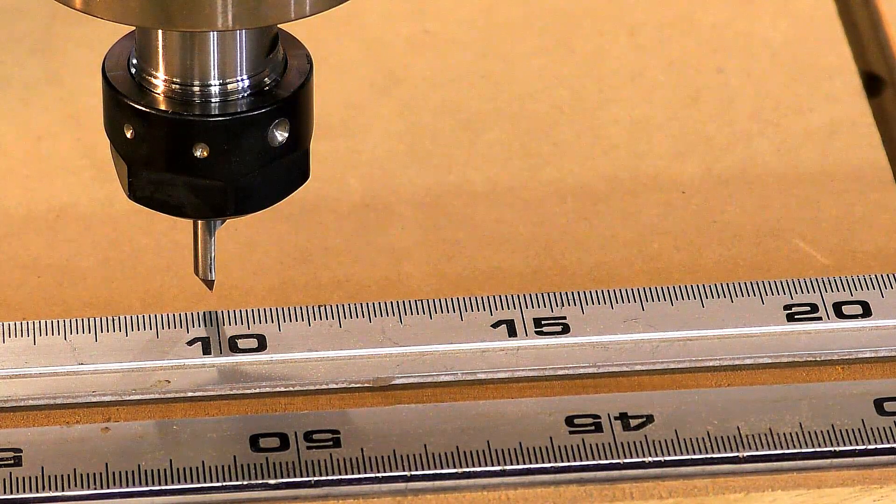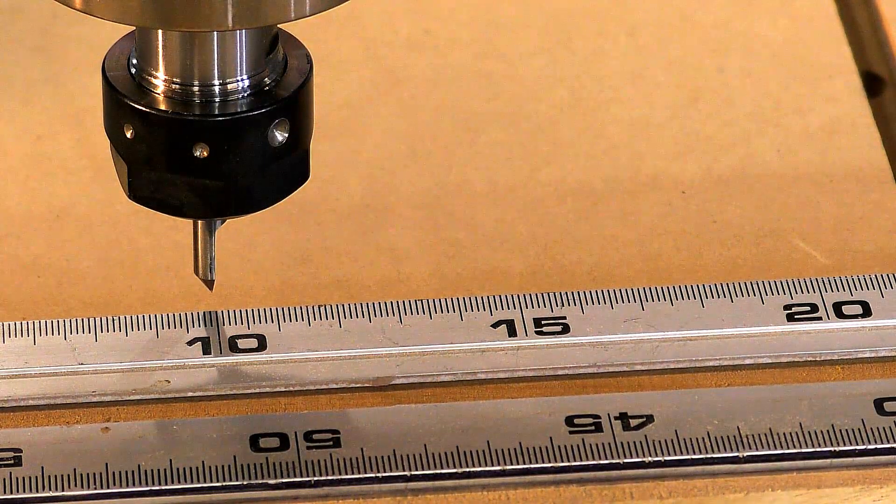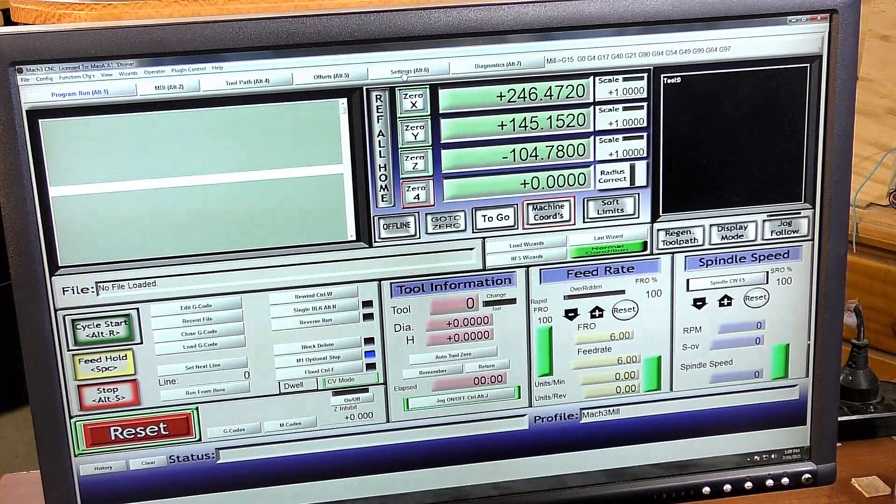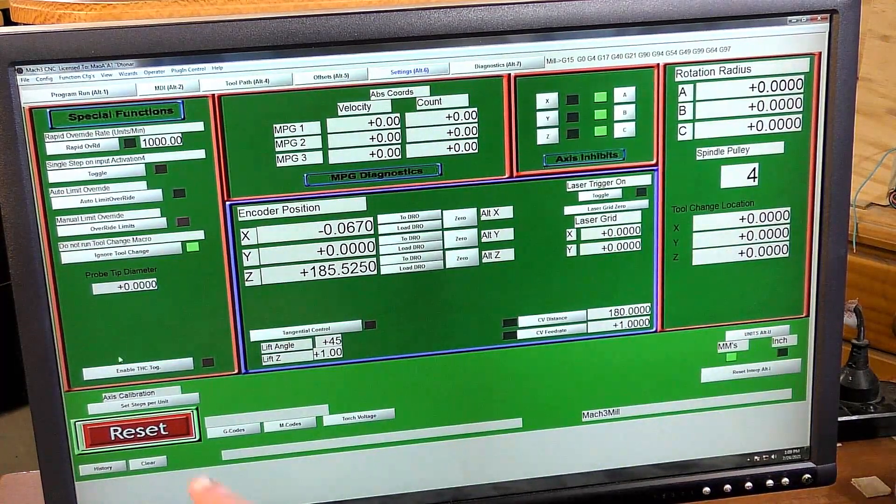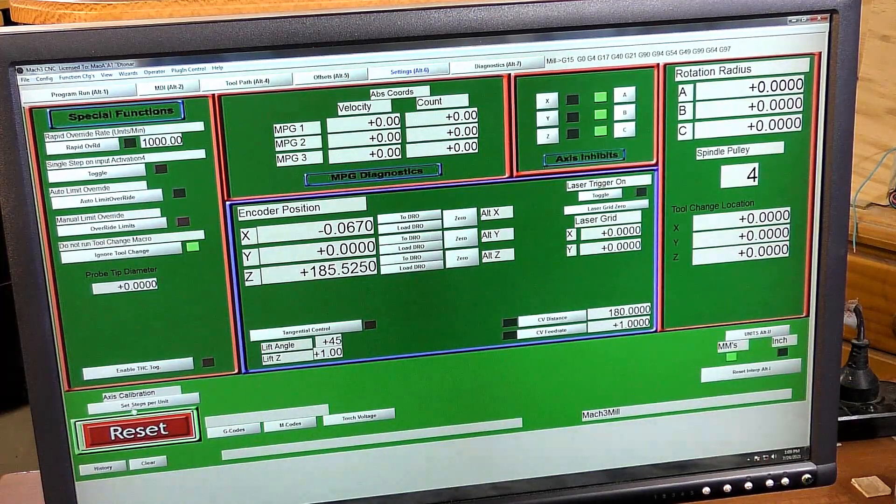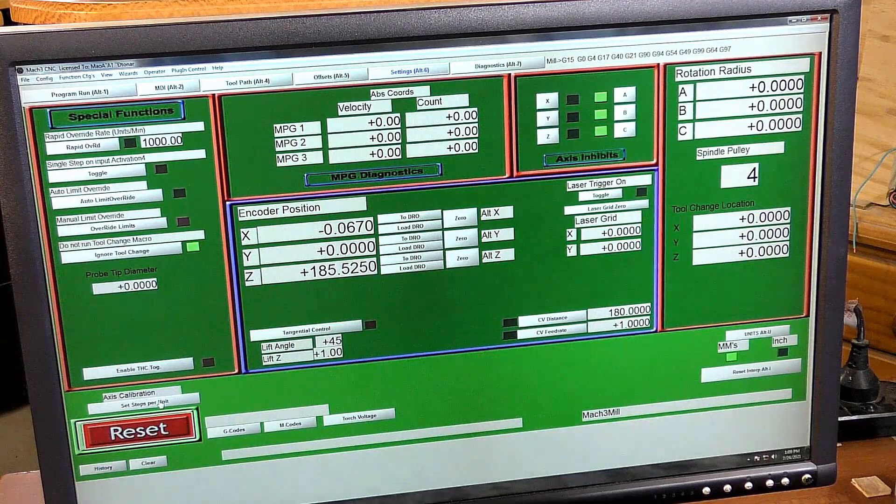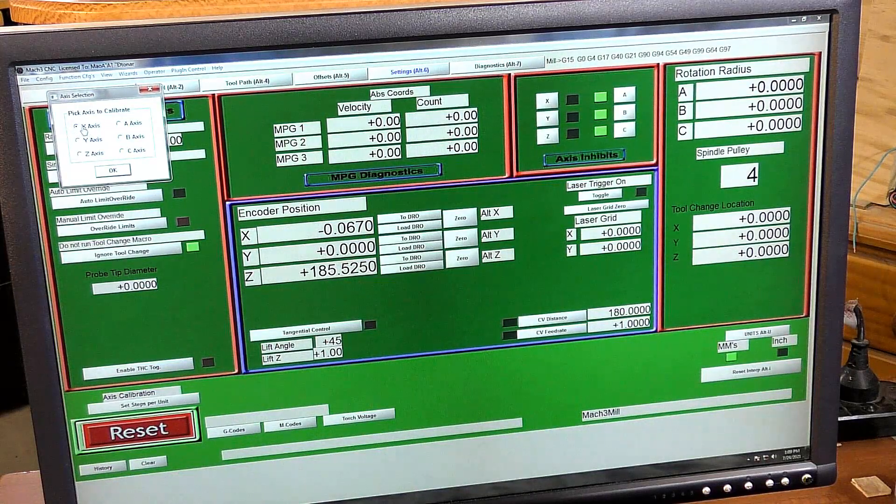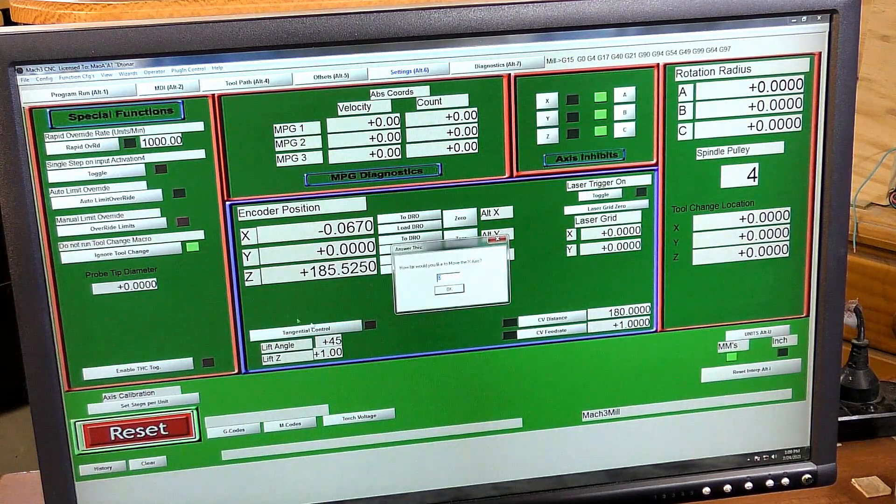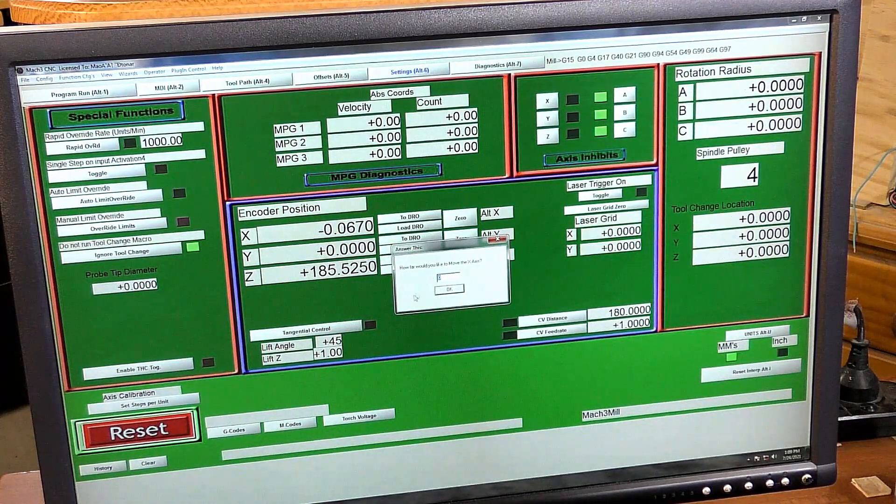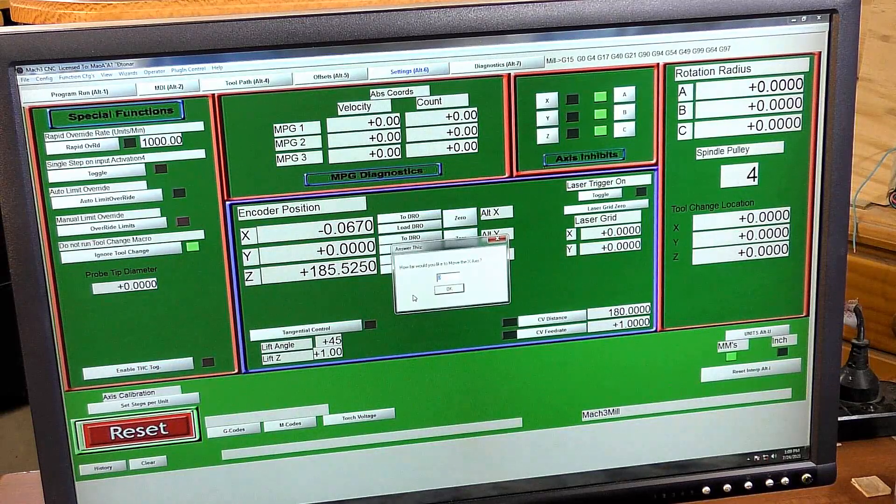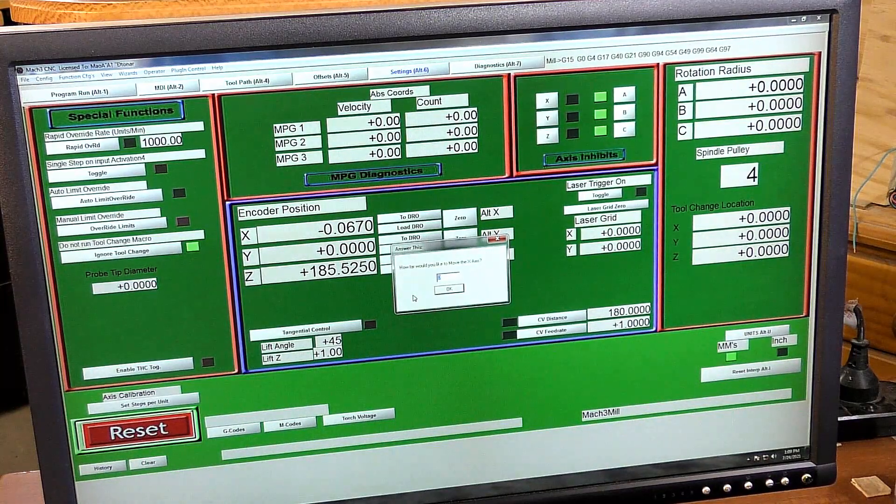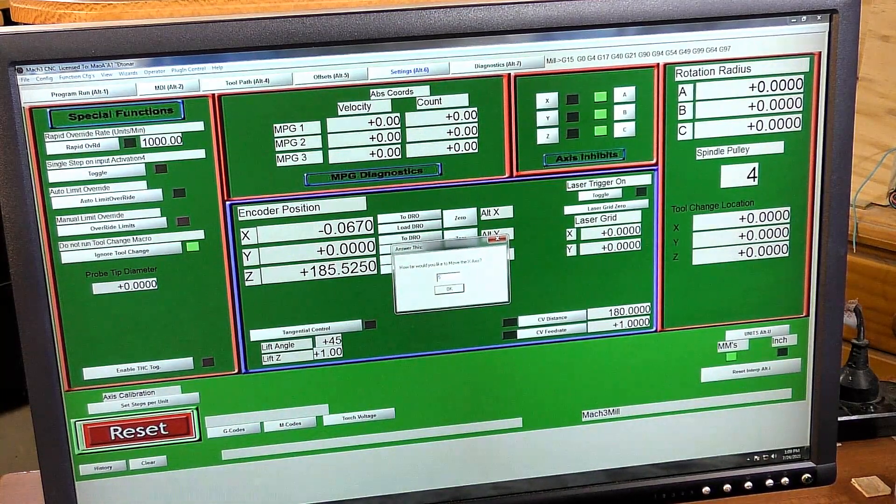So in Mach 3, come to Settings and down to this bottom corner here, Set Steps Per Unit. Open that up. We're going to check the X and press OK. You just put in here how many millimeters you want it to move. We're going to say 50, which is two inches thereabouts.